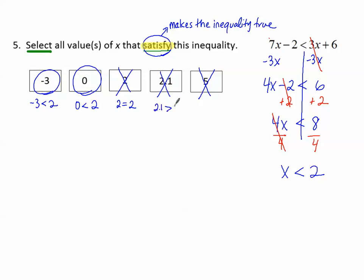2.1 was greater than 2, and 5 is greater than 2, which is why these don't work.